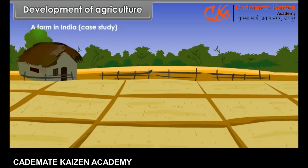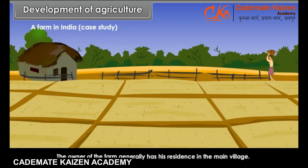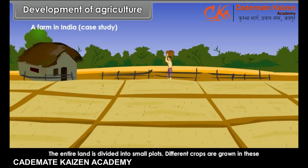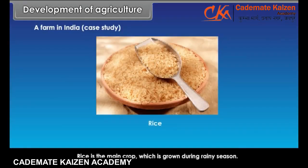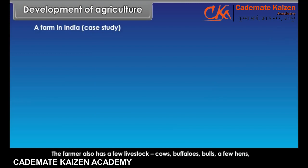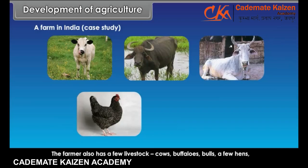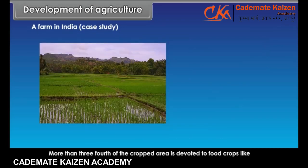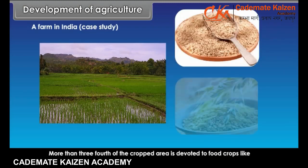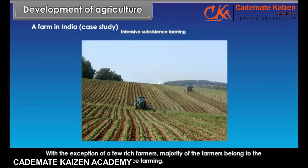A farm in India — a case study: The owner of the farm generally has its residence in the main village. The entire land is divided into small plots and different crops are grown in these plots. Rice is the main crop grown during the rainy season. The farmer also has a few livestock — cows, buffaloes, bulls, a few hens, roosters and chickens. More than three-fourths of the cropped area is devoted to food crops like rice and wheat. With the exception of a few rich farmers, the majority belong to the category of intensive subsistence farming.